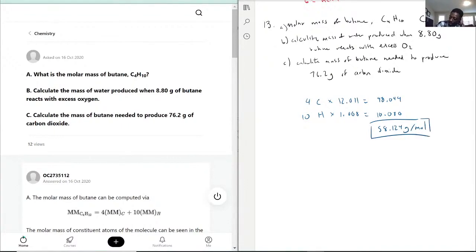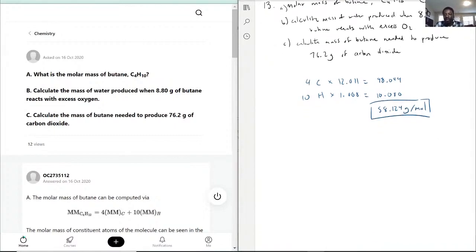So now we have the first part, the molar mass of butane. Now they're asking us to calculate the mass of water produced when 8.80 grams of butane react with excess O2. With that being said, this is a combustion equation. We know that C4H10 combustion is just when it reacts with oxygen, hence why they mentioned excess O2 plus energy.